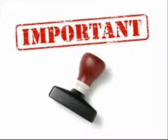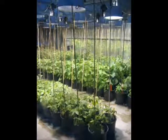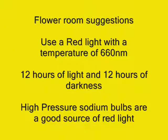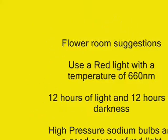It is important that once you have established the timing for your plants, you keep them on the same schedule. For grow spaces, the recommended settings for a vegetative room are 18 hours of light and 6 hours of dark, using blue lights with a wavelength of 440 nm — metal halide bulbs give good blue light. When setting up a flower room, use 12 hours of light and 12 hours of dark, utilizing red and orange lights with a temperature of 660 nm — high pressure sodium bulbs are a good source of red and orange light.